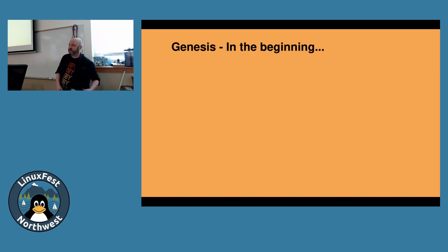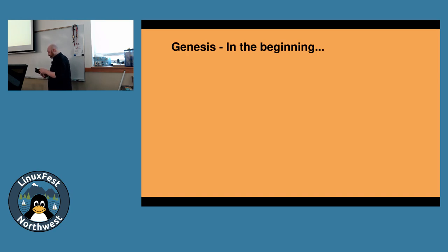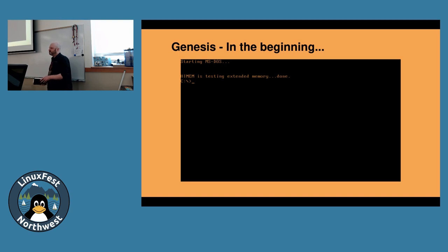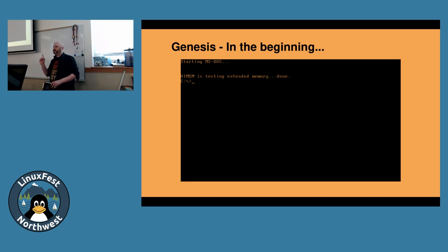Start at the beginning. Genesis, chapter one. In the beginning, God created the heavens and the earth. The earth was without form, and void, and darkness was over the face of the deep. And it probably looked a little something like this.